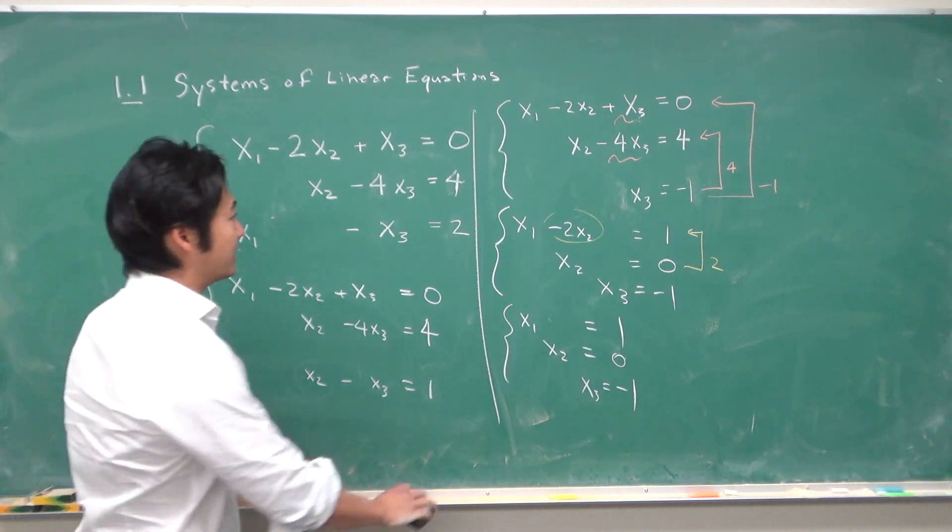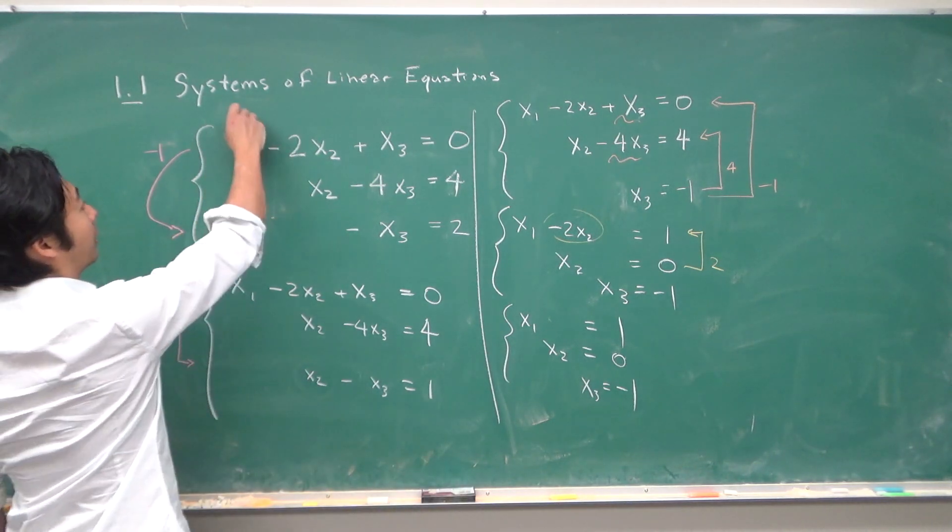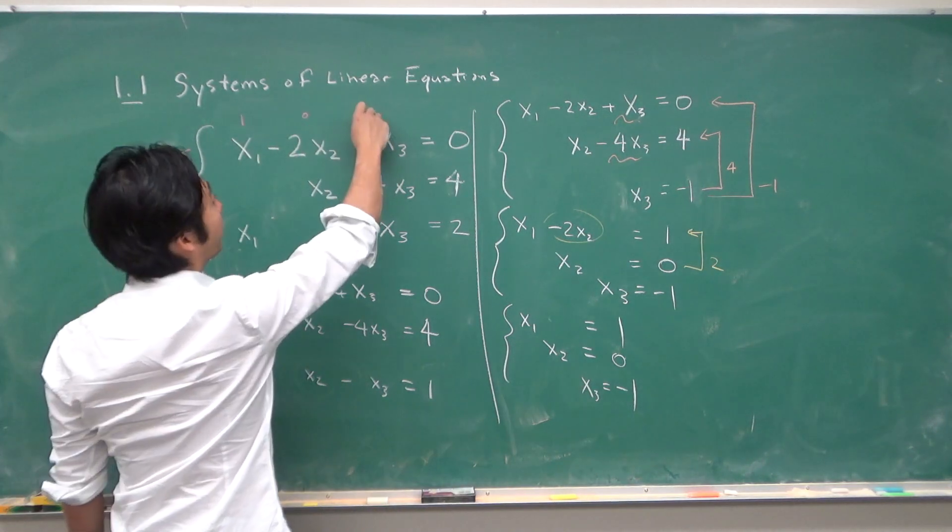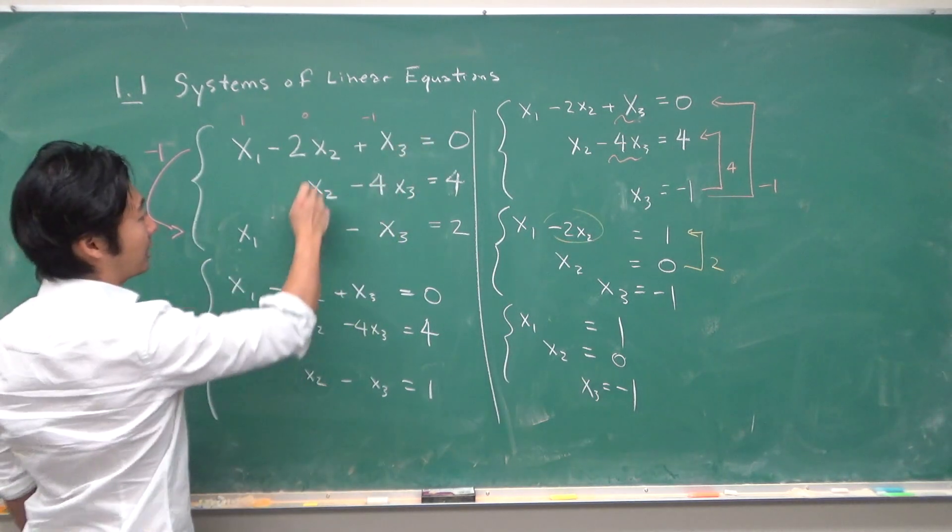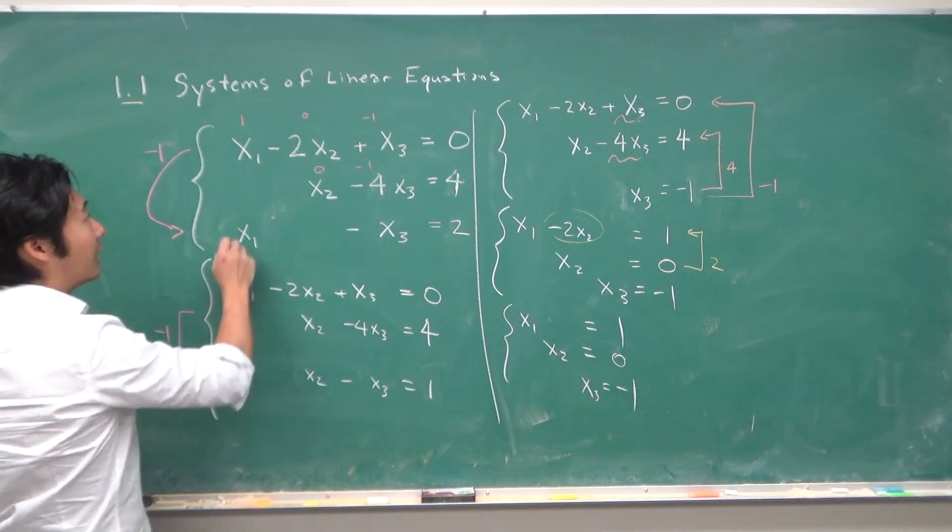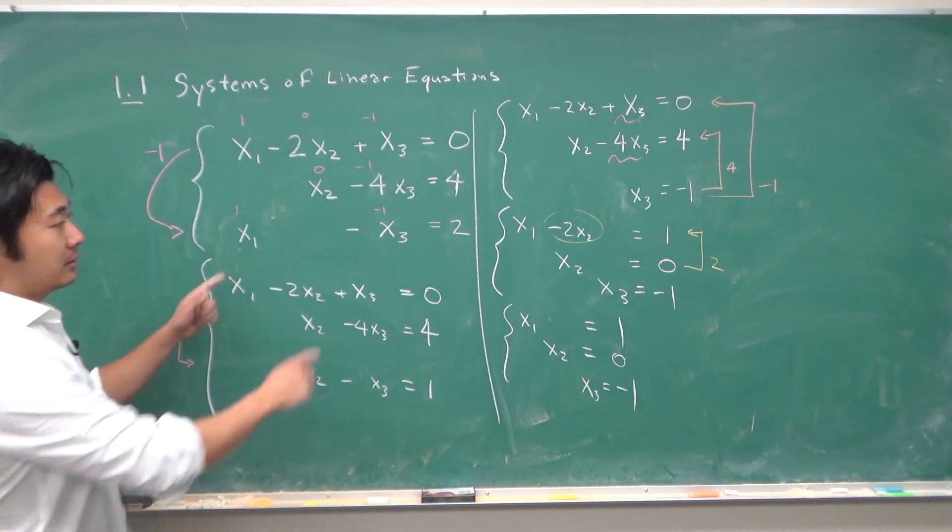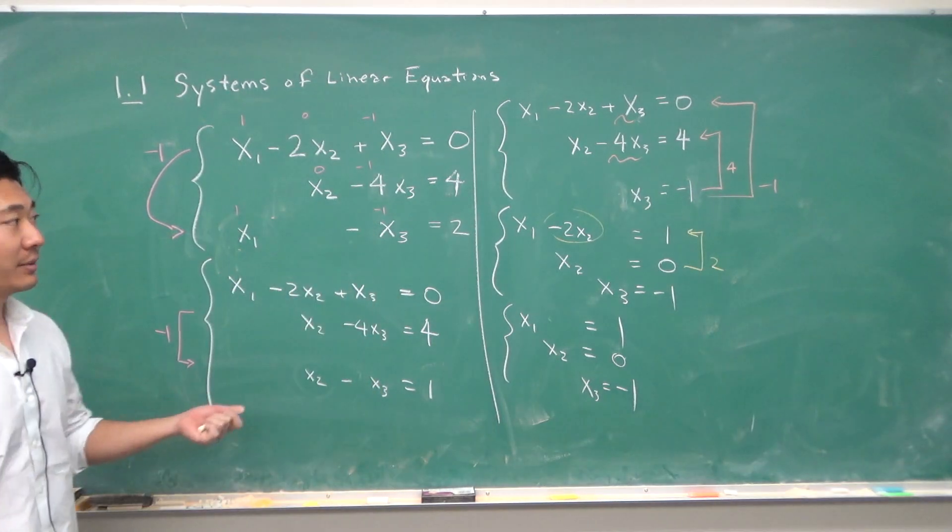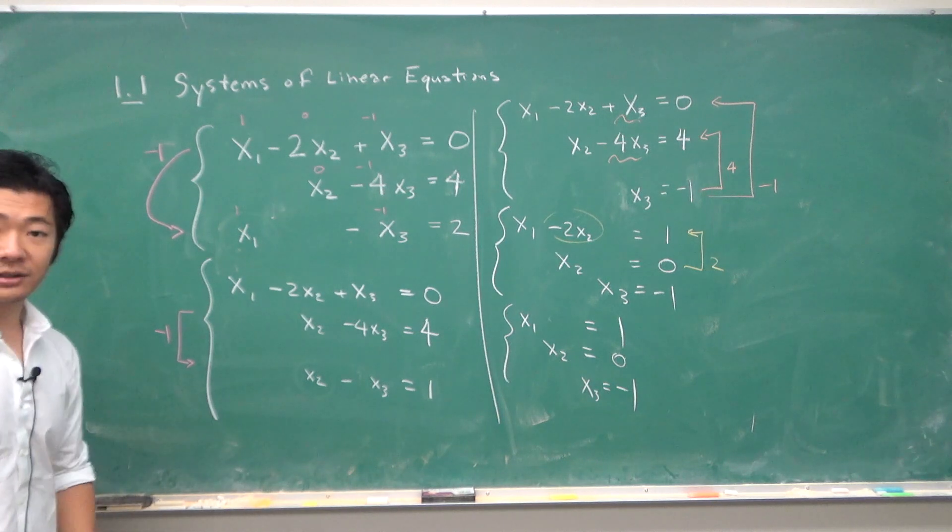Let's double check to make sure that that is indeed our solution. So 1 minus 0 minus 1. 1 minus 1 is 0. We have 0 minus 1 times minus 4 is 4. And 1 negative 1. 1 minus minus 1. So 1 plus 1 is 2. So that is indeed our solution.